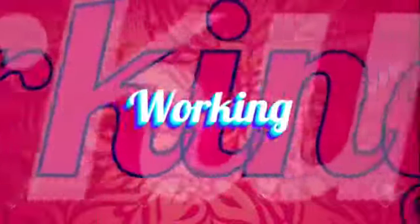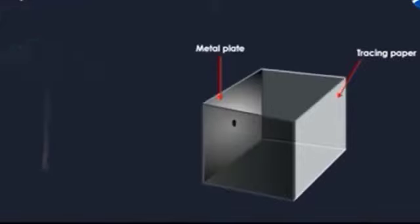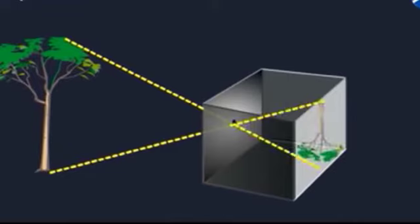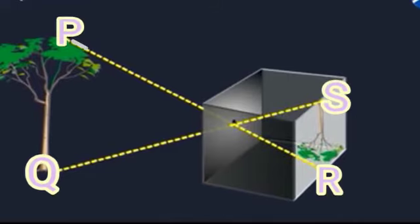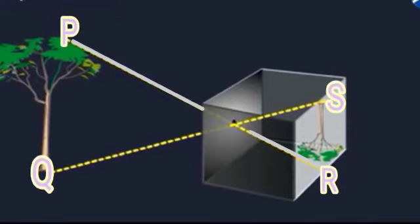Now let's understand how it works. Place the pinhole camera in front of an object in such a way that an image is formed. The light ray from the top of a tree travels in a straight line